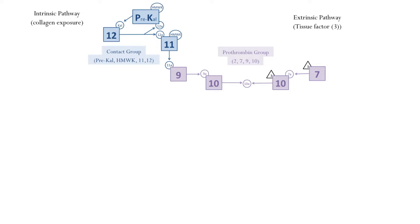Once factor X has become activated, the common pathway begins. Xa reacts with factor II. Factor II is also known as prothrombin, an inactive enzyme. Factor II is the last factor in the prothrombin group. These factors require vitamin K for functional synthesis, along with factor IV, also known as calcium ion.